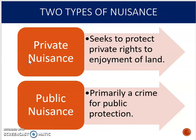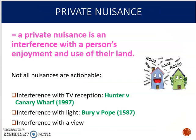There are two types of nuisance that we're going to study. Private nuisance protects private rights to the enjoyment of land — this is the common one where you've got disputes usually between neighbours. We're also going to look at public nuisance, which is both a tort and a crime, providing public protection where a nuisance affects a whole class of the public. But today we're going to look at private nuisance, which is an interference with a person's enjoyment and use of their land.